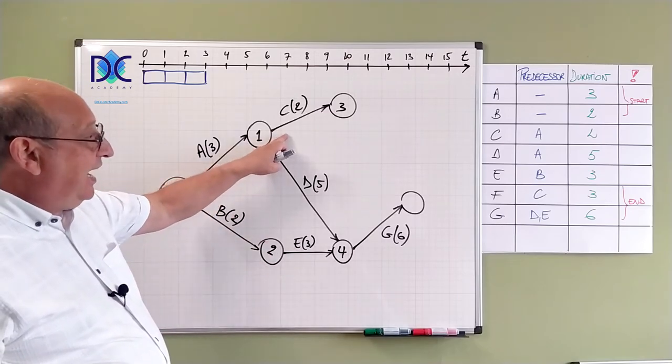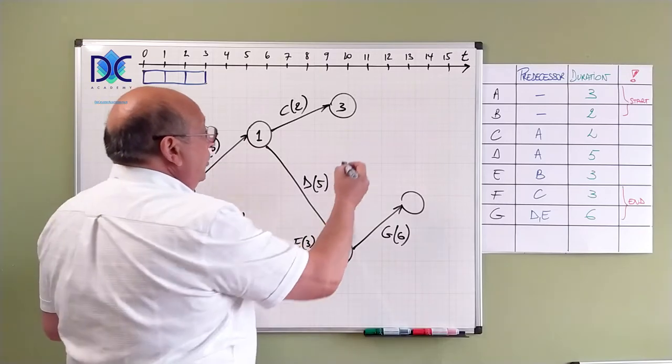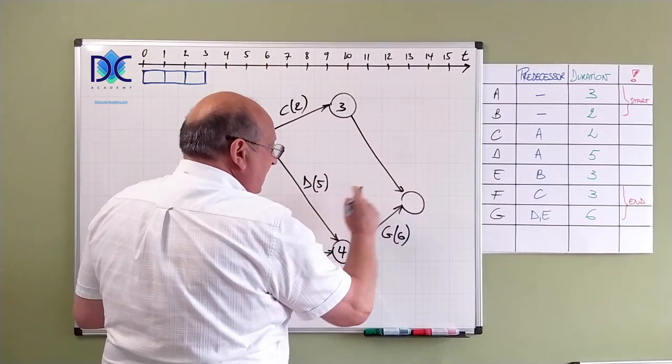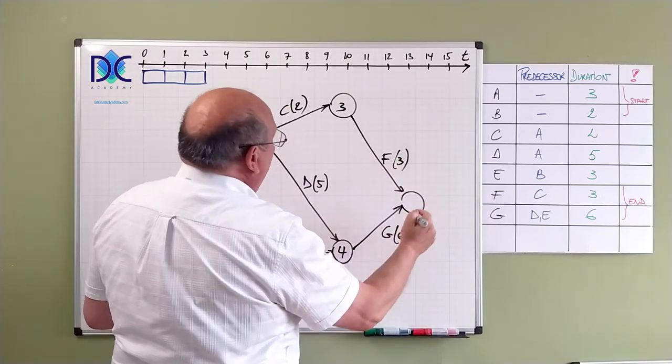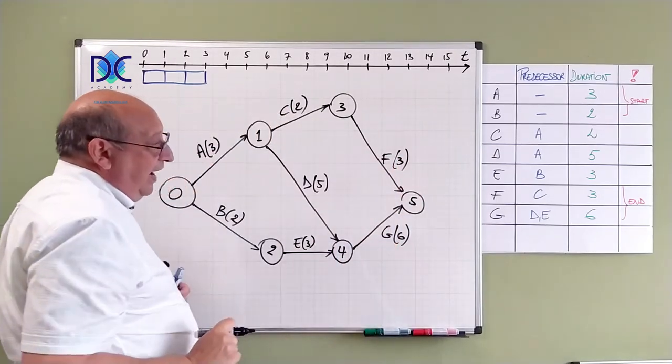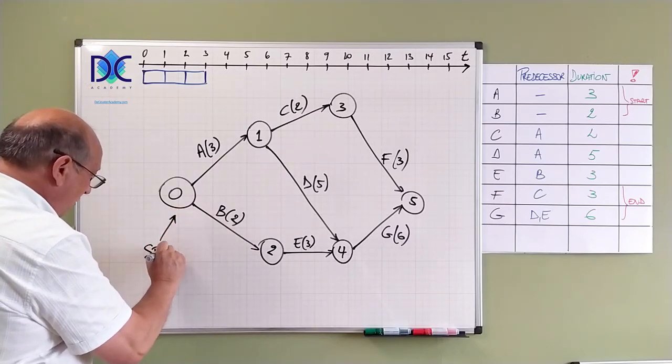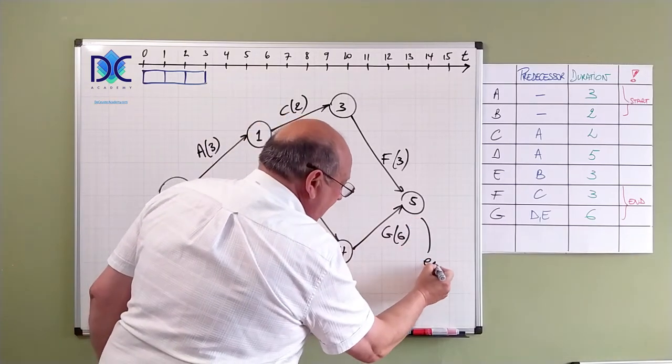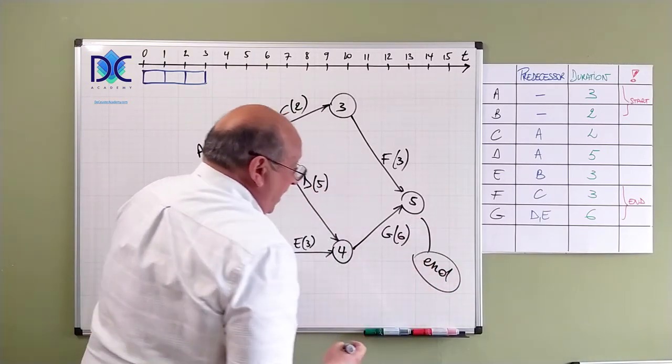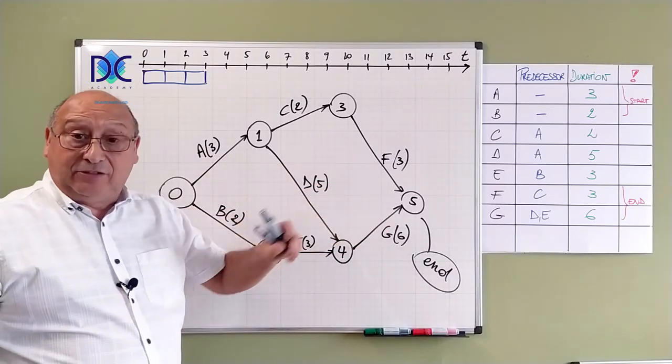Now we also have C. After C we have F. And F is also an end activity. So we have activity F with a duration of three. And the final note is five. So this is the start note. And this is the end note. And we see F and G end in that end note.